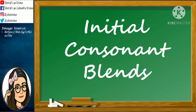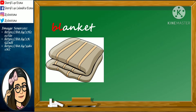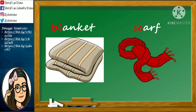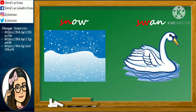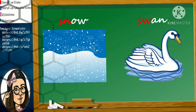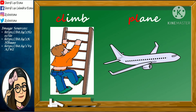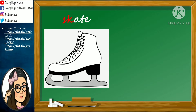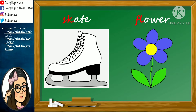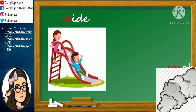Let us now look at some examples of words with Initial Consonant Blends: Blanket, Shark, Snow, Swan, Climb, Clean, Skate, Flower, Slide, Slime, Smoke.